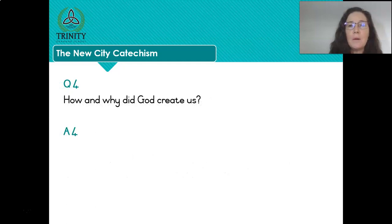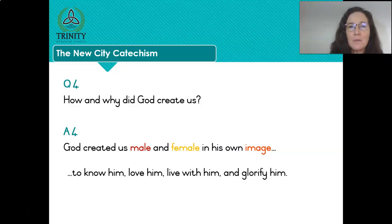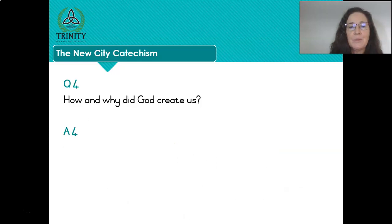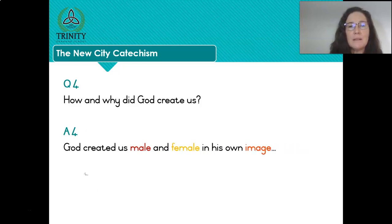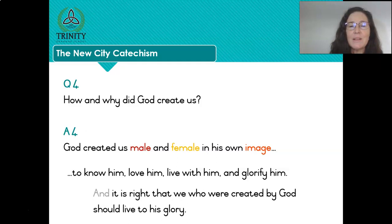Question four: how and why did God create us? God created us male and female in his own image, to know him, love him, live with him and glorify him. And it is right that we who were created by God should live to his glory. Shall we say that again? How and why did God create us? God created us male and female in his image, to know him, love him, live with him and glorify him. And it is right that we who were created by God should live to his glory.